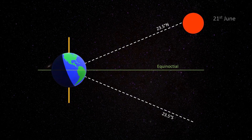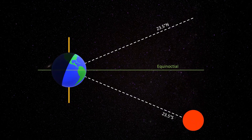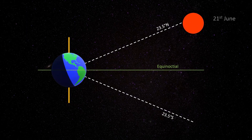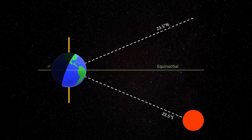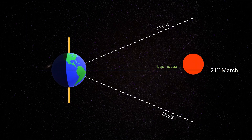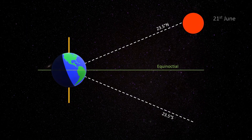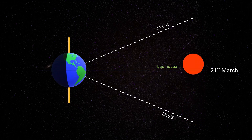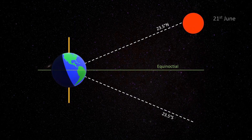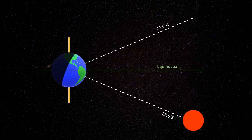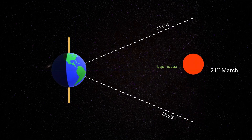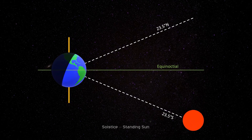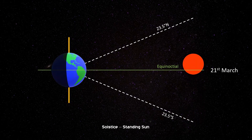On the 21st of June and 21st of December, the declination of the sun reaches its apex. The sun changes its direction at this time of the year. As a result, from the vantage point of an observer on the surface of the earth, it seems that the sun is stationary. The word solstice is derived from this observation — solstice in English means standing sun.